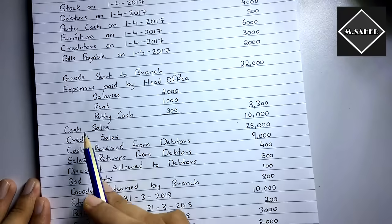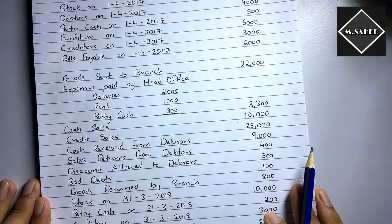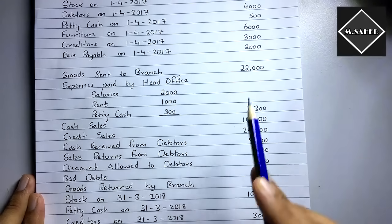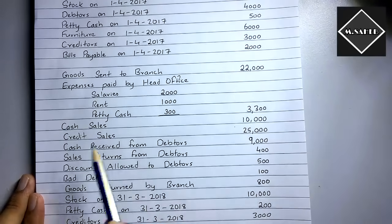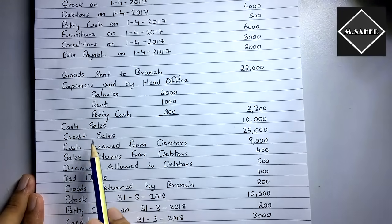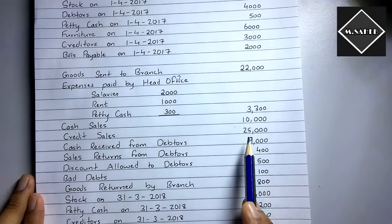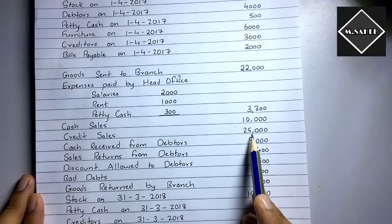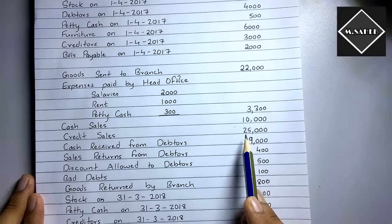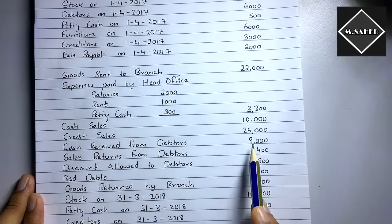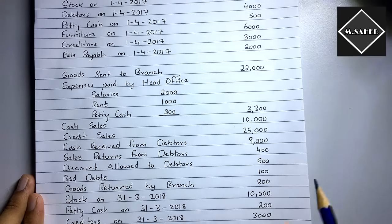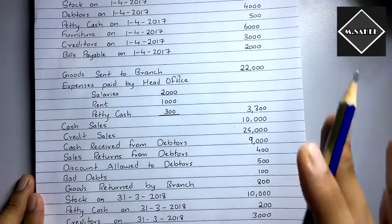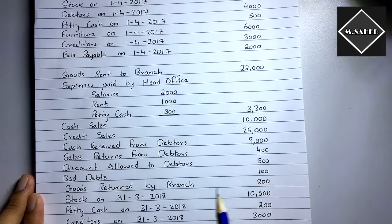Cash sales means the branch sells goods and immediately receives cash, which is remitted back to the head office. In the branch account on the credit side, it comes as 'By Bank' — cash sales of 10,000 comes directly. Credit sales won't come directly because we may not receive the whole amount in that year. For example, there are credit sales of 25,000 here, but only 9,000 has been received as cash from debtors.